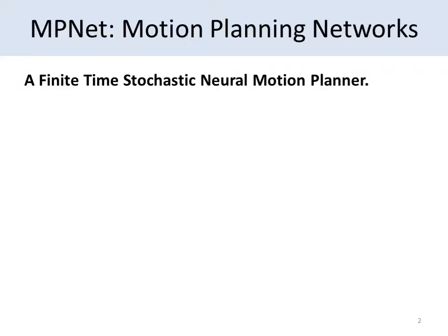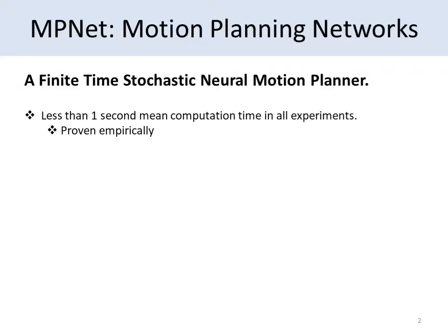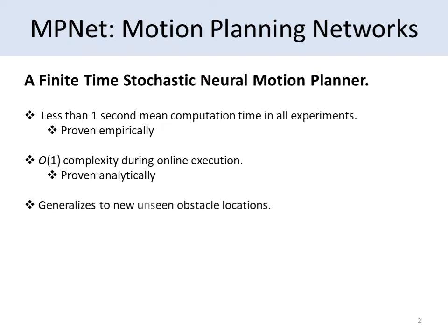The main features of MPNet are as follows. First, the mean computation time of MPNet is less than one second in all experiments, including higher dimensional problems. Second, it has a computational complexity of O(1) during online execution. Third, it generalizes very well to new obstacle locations.